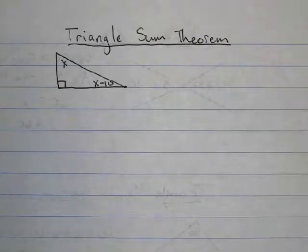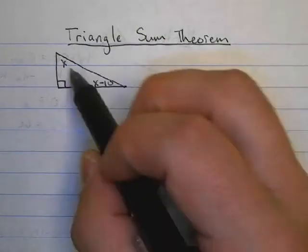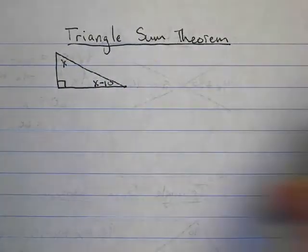In this video, we're going to be looking at the triangle sum theorem. So what the triangle sum theorem states is that if I add all three angles of a triangle together, I can set it equal to 180, and that'll let me solve.